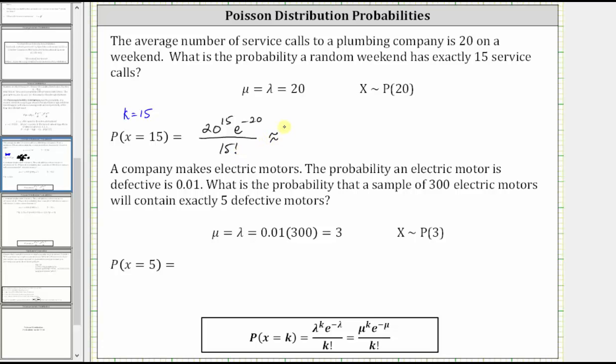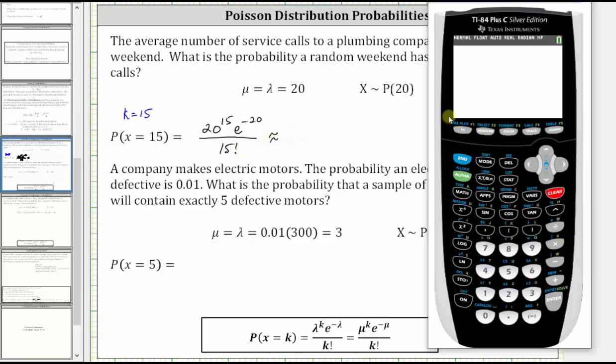And now we go to the calculator and get our decimal approximation. We need the numerator in parentheses. So open parenthesis, 20 raised to the power of 15, right arrow, second natural log brings up e to the power of, and then we enter the exponent of negative 20, not minus 20. We use the negative below the three, negative 20. Right arrow, close parenthesis.